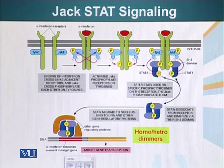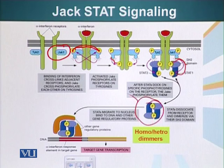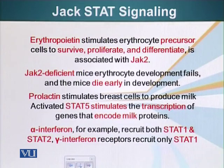Here you can see the whole scheme: the receptor dimerizes; the receptor is already attached to JAKs; JAKs cross-phosphorylate each other, increasing their kinase activity; they phosphorylate the receptor; the phosphorylated receptor recruits STATs; STATs get phosphorylated, causing a conformational change; STATs are released and dimerize; they go to the nucleus and recruit other gene regulatory proteins, resulting in transcription. This is one of the most direct routes from the cell surface to the nucleus.